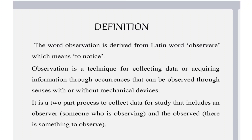Observation is a two-part process used to collect data for a study. It includes an observer — someone who is observing — and the observed — something being observed. For example, if a teacher is observing a procedure performed by a student, the teacher is the observer and the procedure the student is performing is the observed thing.